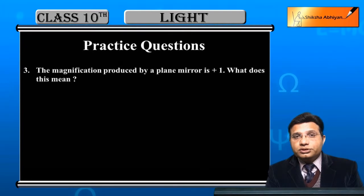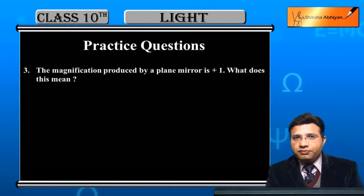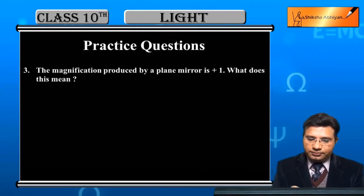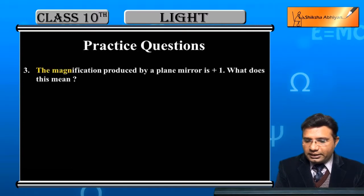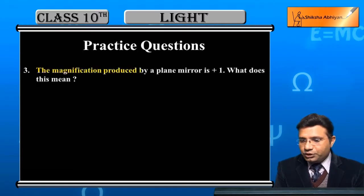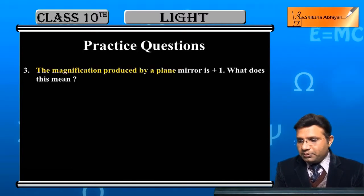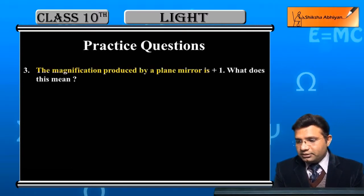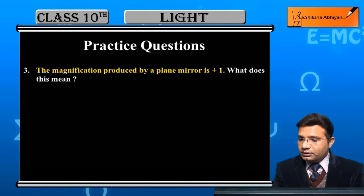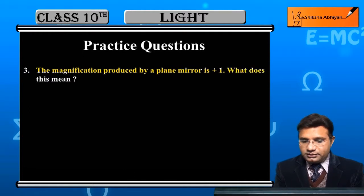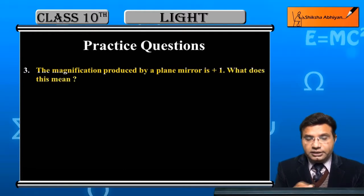Now question number 3 on the concept of reflection of light. The magnification produced by a plane mirror is plus 1. What does this mean?